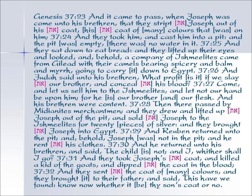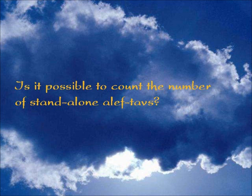We do find some interesting places. This is the story of Joseph being taken by his brothers and thrown into a pit. In this small story, all the Aleph Tavs — most are hyphenated or have a Vav — you can count them. There are 12. That's kind of interesting. And is it possible to count the number of standalone Aleph Tavs? Maybe those have more significance than the others.